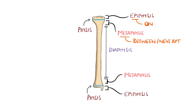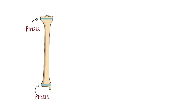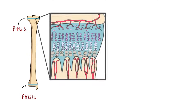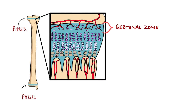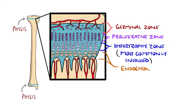The growth plate is made up of several layers: from the germinal or reserve zone nearest to the epiphysis, followed by the proliferative zone, hypertrophic zone, and zone of endochondral ossification, nearest the metaphysis. Most of the time it is the hypertrophic zone that is injured with these fractures.